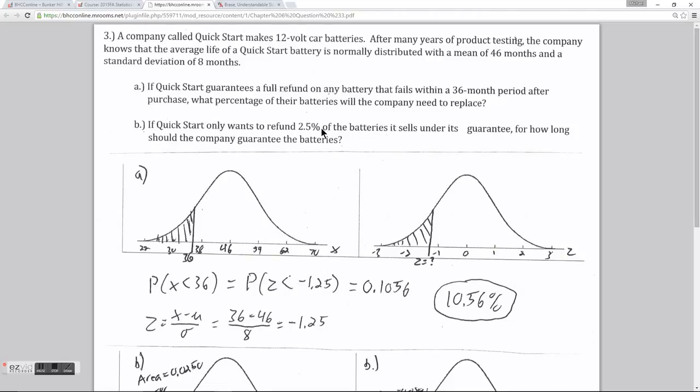So in Part A, it asks, if the company guarantees a full refund on any battery that fails within 36 months, what percentage of their batteries will they need to replace under this guarantee? If the batteries are normally distributed with a mean of 46, then a lifespan of only 36 months would be on the left side of my distribution, and the batteries that the company would need to replace would be the batteries that last less than 36 months.